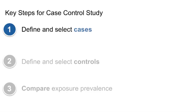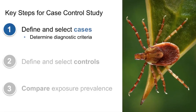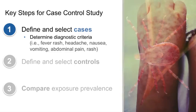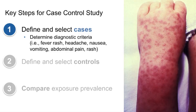Researchers first determine the diagnostic criteria they will use to define a case. For example, if studying Rocky Mountain Spotted Fever, which is a tick-borne disease, the diagnostic definition of the disease should be clearly specified in order to classify people as cases or controls. Diagnostic criteria should include fever, headache, nausea, vomiting, and abdominal pain. A very large proportion of cases also have a rash within two to fourteen days of a tick bite, so you could include that symptom, or as a researcher you could decide to not include rash and make your definition slightly broader.